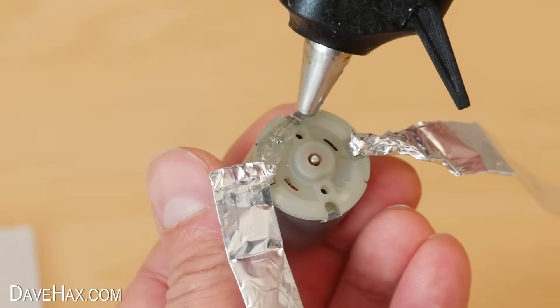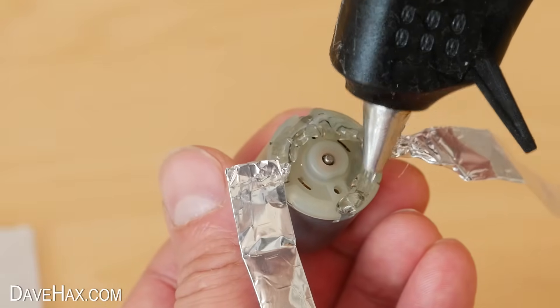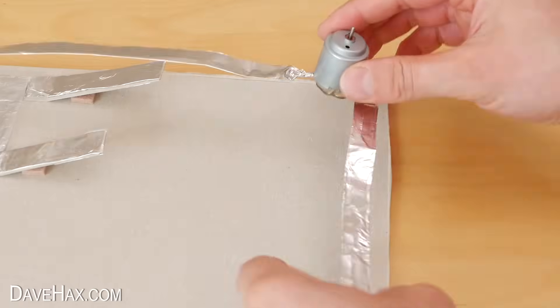Then using a glue gun I put a line of glue around the outside of the motor and fixed it to the circuit board here.